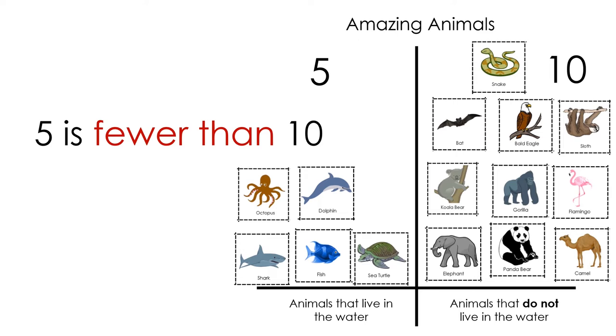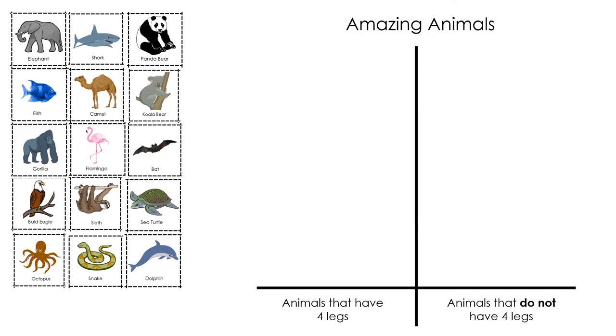Let's see if we can find some other ways that these animals are similar and different from one another. We can use a different characteristic to sort and classify. When I look at the animal cards again, I notice that some of them have legs. By finding a characteristic, I can create two categories in which to sort and classify animals.